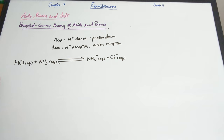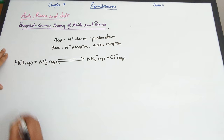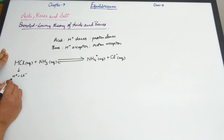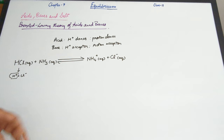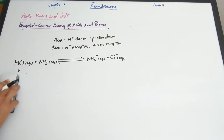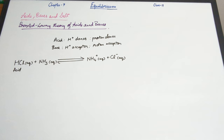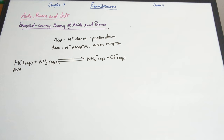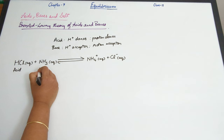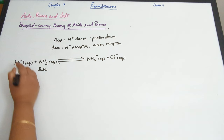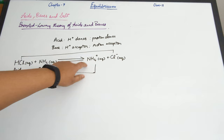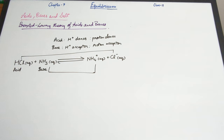What happened here? HCl gave away a proton — HCl gave away H⁺ plus Cl⁻. The NH3 accepted the proton and led to the formation of NH4⁺. So HCl is donating a proton, which makes it an acid. As a base accepts a proton, it seems like acid-base reactions are just proton transfer reactions — there is a transfer of proton taking place.